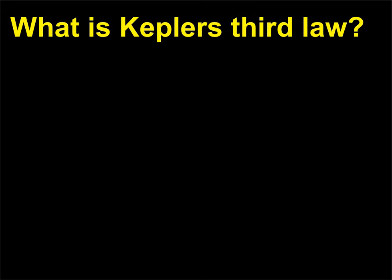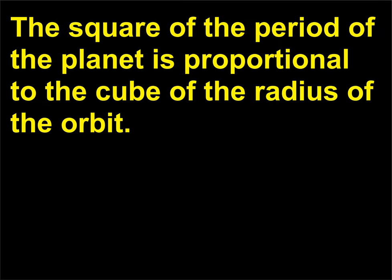What is Kepler's third law? The square of the period of the planet is proportional to the cube of the radius of the orbit.